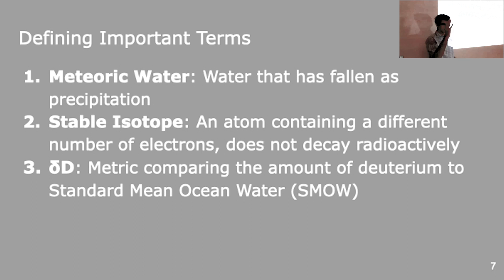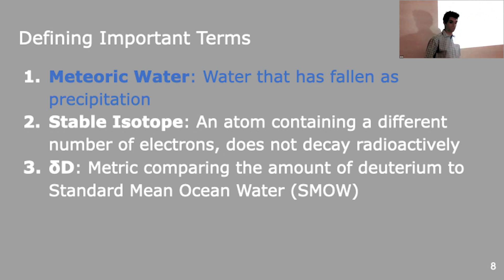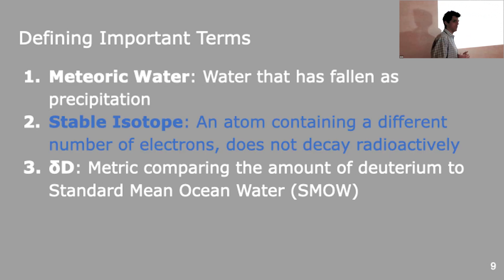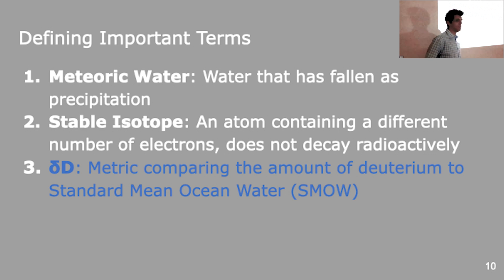I may have introduced some terms that some people are confused by, so I want to define a few of these terms. When I talk about meteoric water, it is really just water that exists because it fell from the atmosphere — it was at one point in the atmosphere, experienced lots of different processes up there, and then eventually fell to the earth. Also, a stable isotope is an atom containing a different number of neutrons, which means it has a larger nucleus, and it does not decay radioactively, meaning over time it retains those neutrons in its nucleus. Finally, delta D is a way of comparing the amount of deuterium, which is a stable isotope of hydrogen, to standard mean ocean water, or essentially the stable isotopic composition of the ocean.